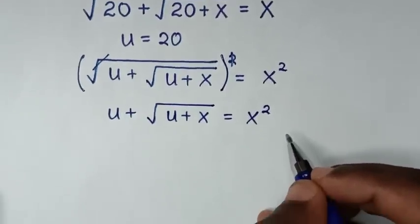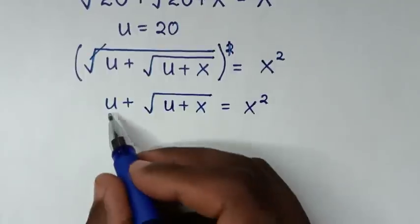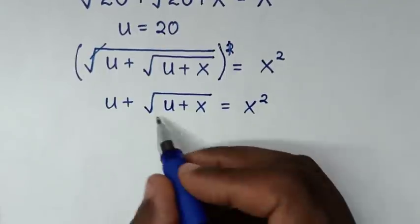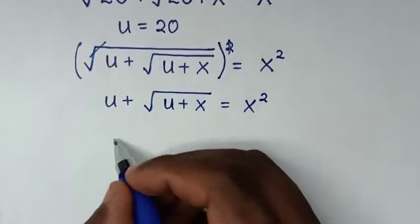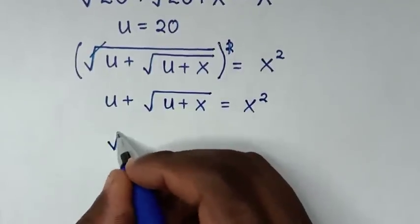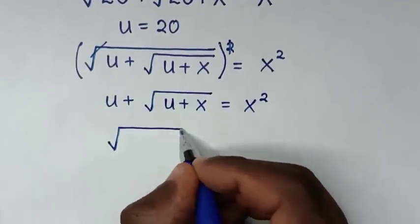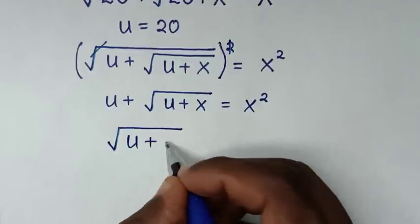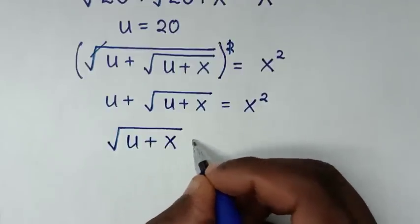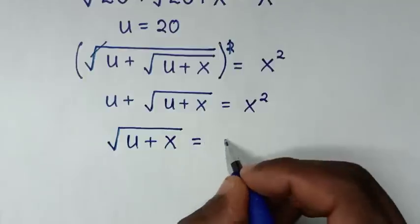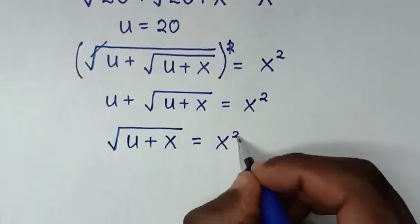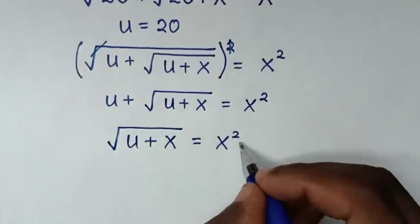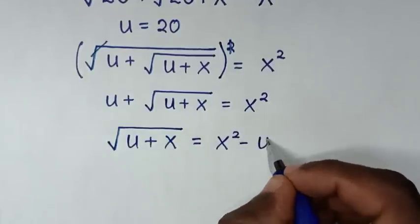In the next step, we take this u to the right side. So it will be: square root of u plus x, is equal to x squared minus u.